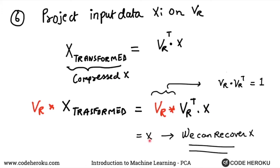What we are saying is even with this transform space, if you multiply the transformed version of your vector with vr itself, you will end up having the original x. That is we can recover x.